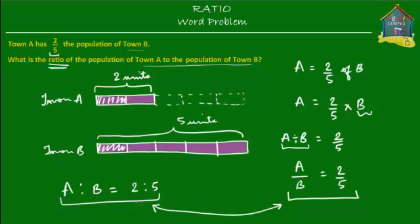That's the relation between ratios and fractions. What was given was that the population of Town A is two-fifths the population of Town B, and from that we got a model where if Town B equals five units, then Town A equals two of those units — which is exactly what the ratio 2 to 5 tells us. Both expressions say the same thing in two different ways.